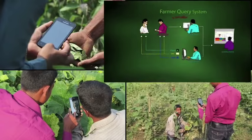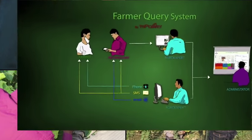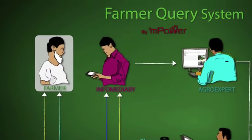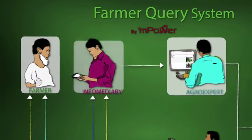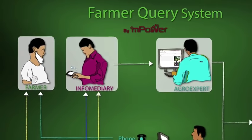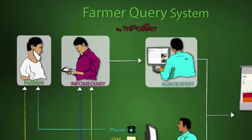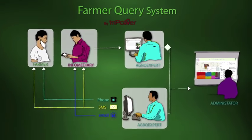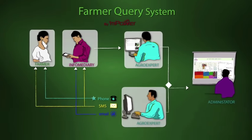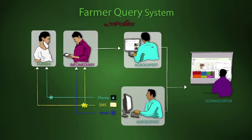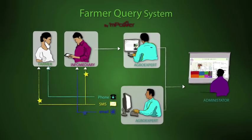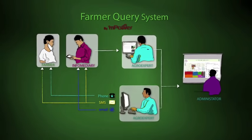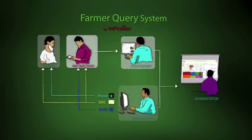The Farmer Query System is an ICT solution where farmers can place a query directly to experts through a local intermediary, empowered with a mobile-based application. A remote agro-expert can then respond to the query through a phone call, SMS, or email. Let us now see how this Farmer Query System operates in real life.